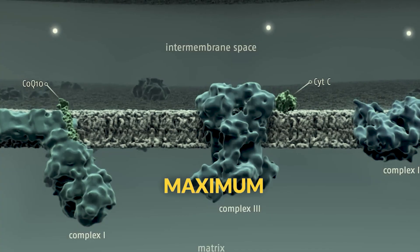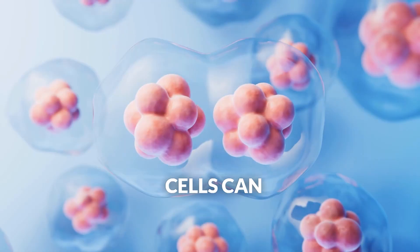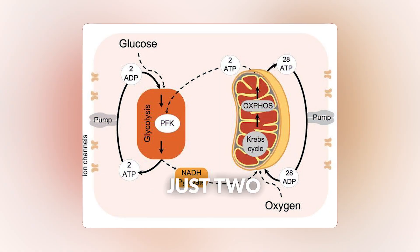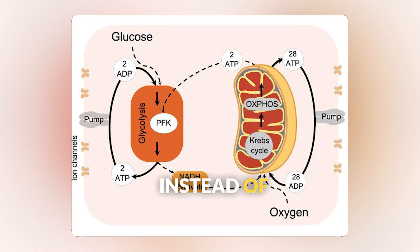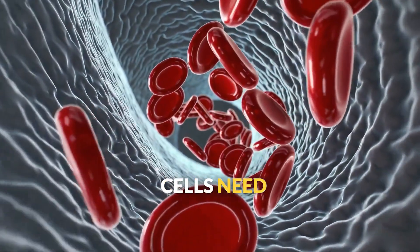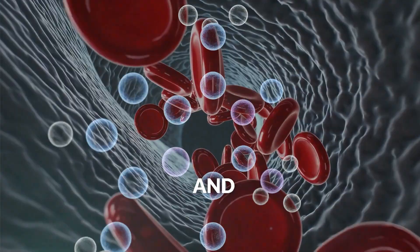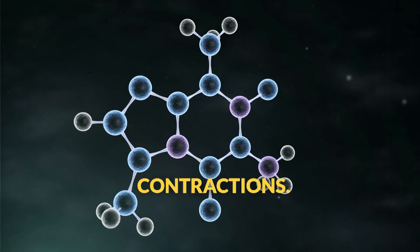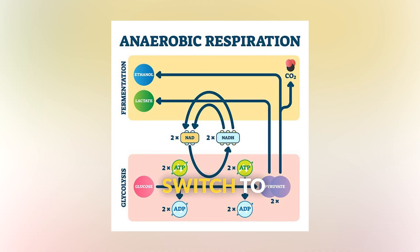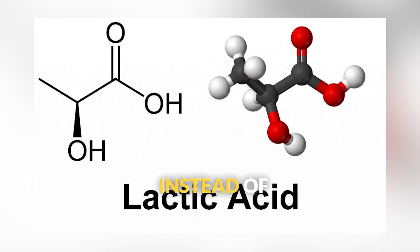Oxygen is essential for maximum energy production. Without oxygen, the electron transport chain can't function, and cells can only use glycolysis and fermentation, producing just 2 ATP per glucose instead of 32 to 38. This is why you breathe faster during exercise — your muscle cells need more oxygen to run cellular respiration efficiently and produce the ATP needed for muscle contractions. When oxygen runs low during intense exercise, your muscle cells switch to anaerobic respiration, producing lactic acid instead of CO2 and water.